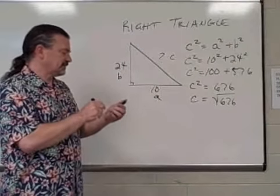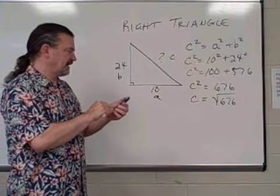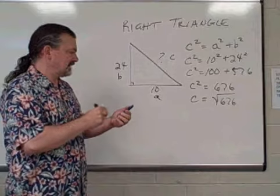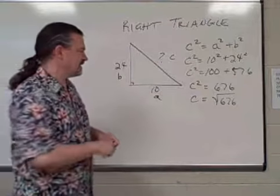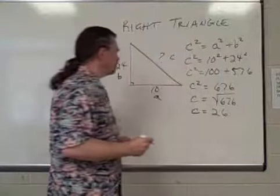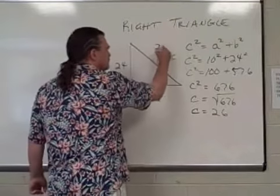So you take your calculator, clear the display, put in 676, use your square root function, and we find that C, the length of that hypotenuse, would be 26 units.